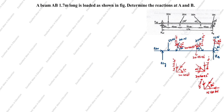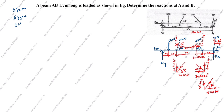The distance between loads is 20 and 40 units. The total beam length is 1.7 meter, which equals 170 centimeters. Now we have drawn the free body diagram. We will use the three equilibrium conditions: summation of Fx = 0, summation of Fy = 0, and summation of moments = 0.